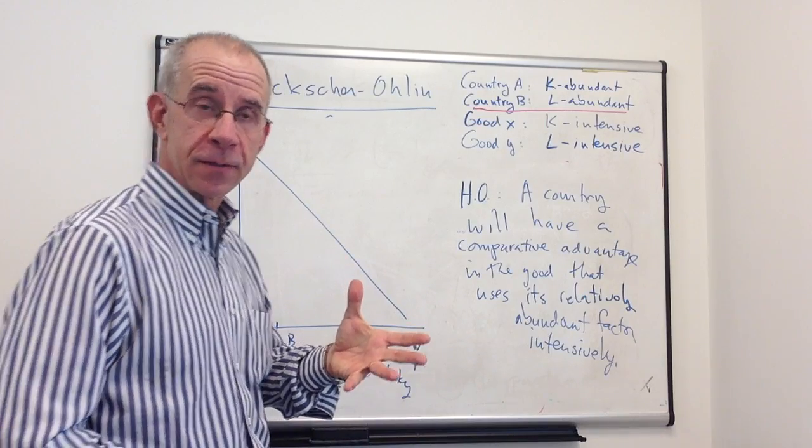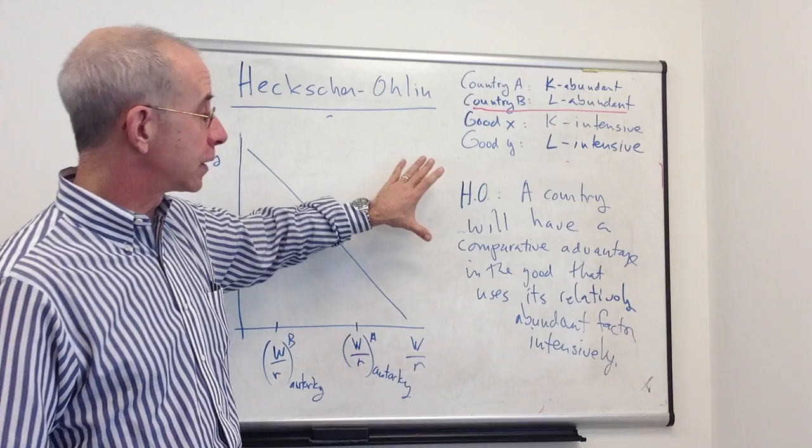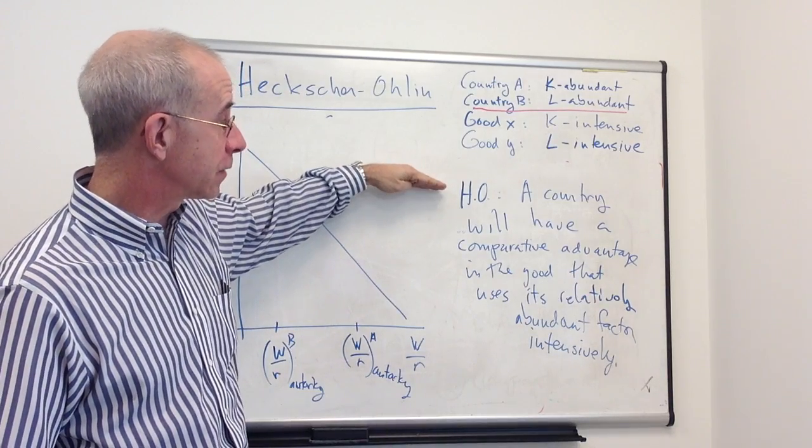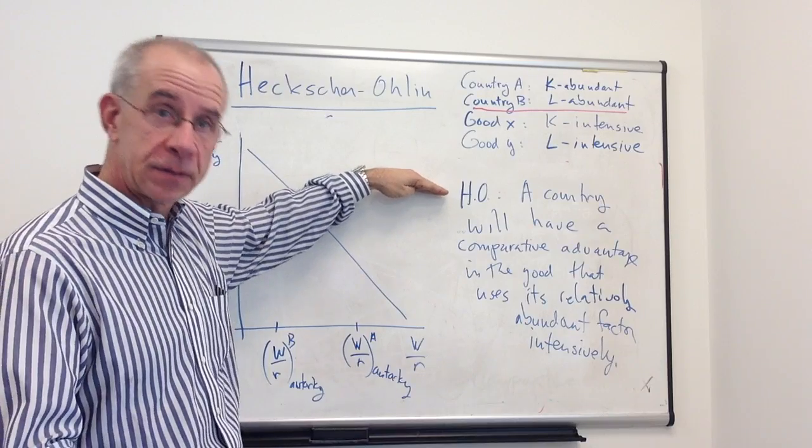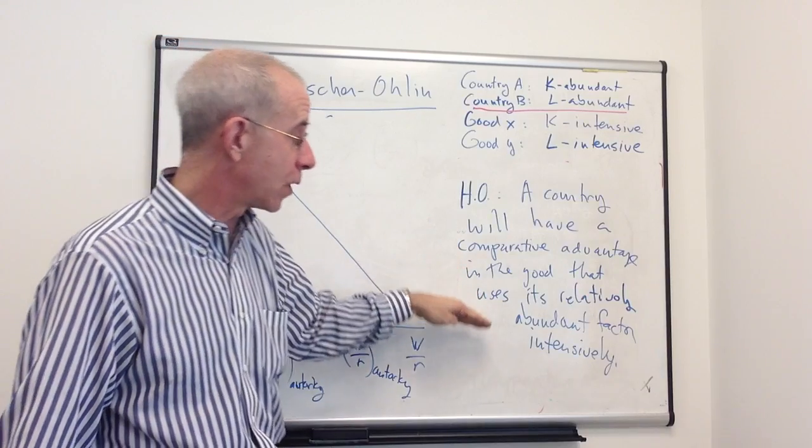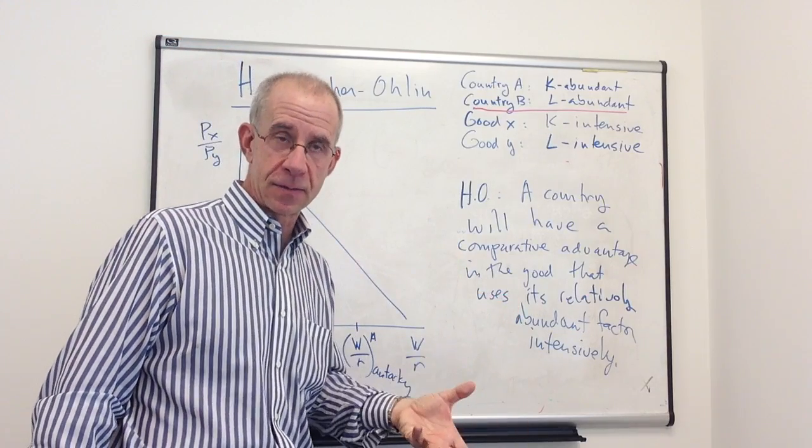Those differing relative factor endowments are going to give you a prediction about the direction of trade. In particular, the Heckscher-Ohlin result says that given the assumptions, a country will have a comparative advantage in the good that uses its relatively abundant factor intensively.